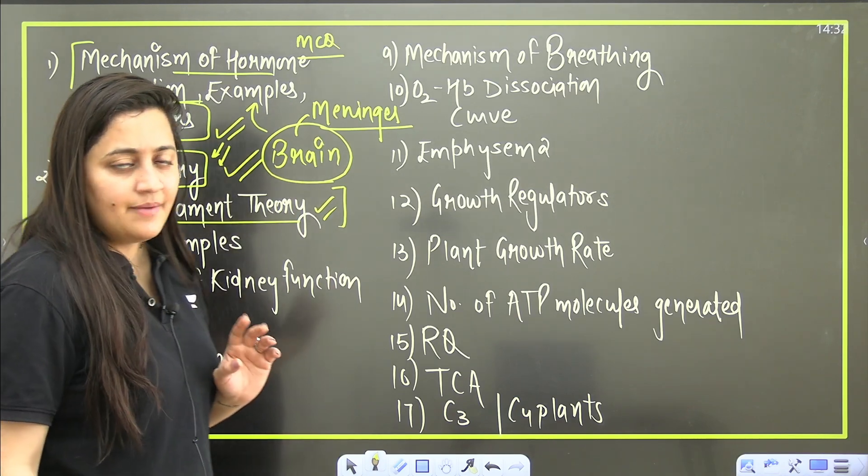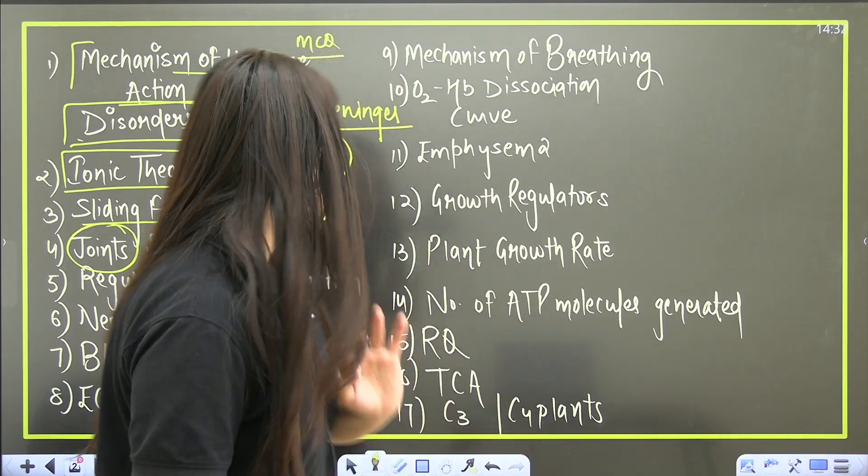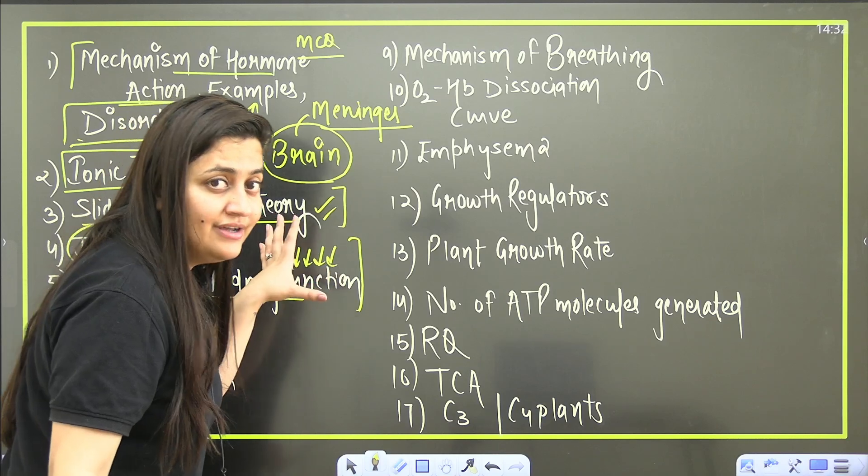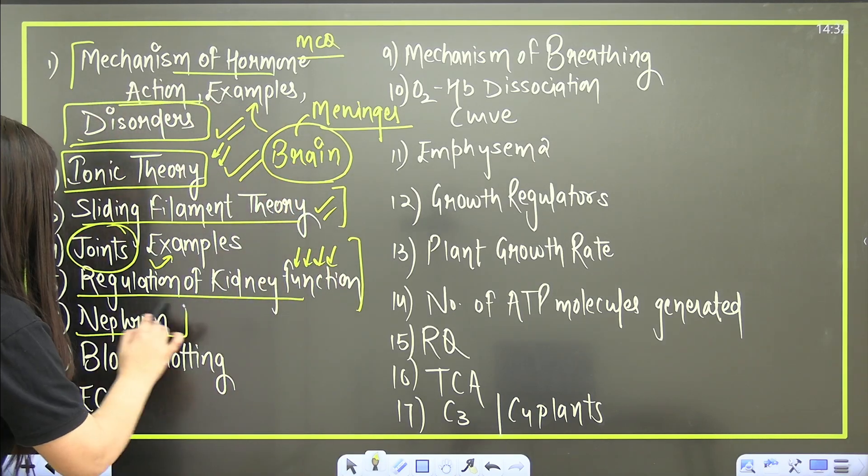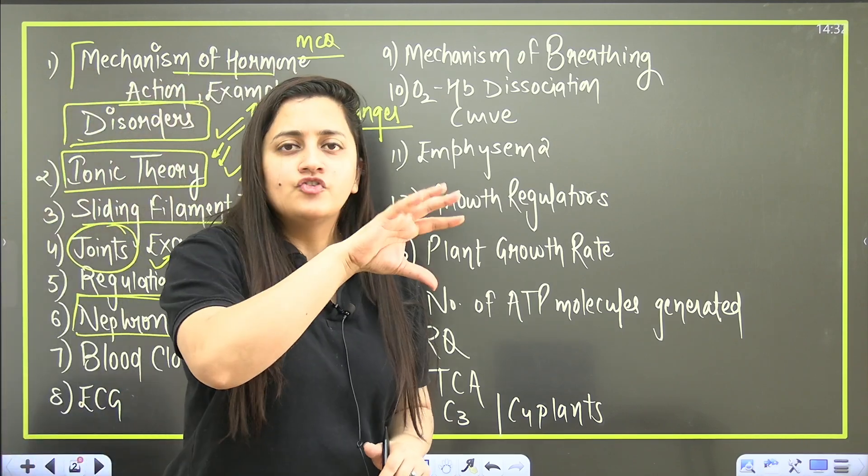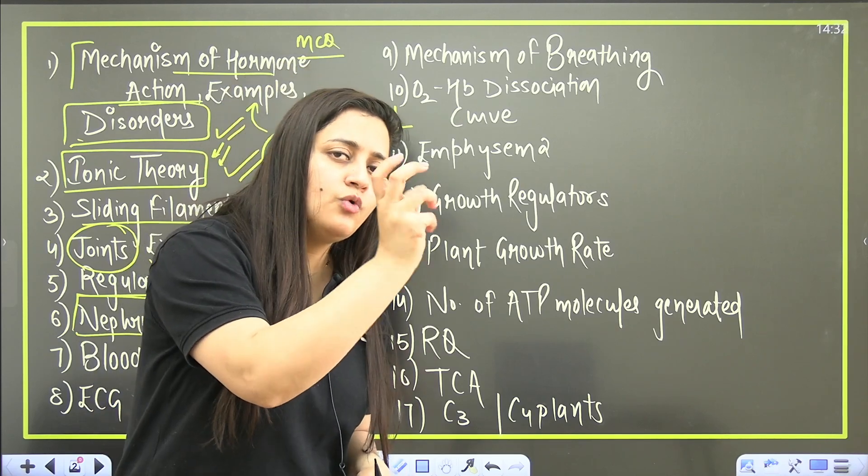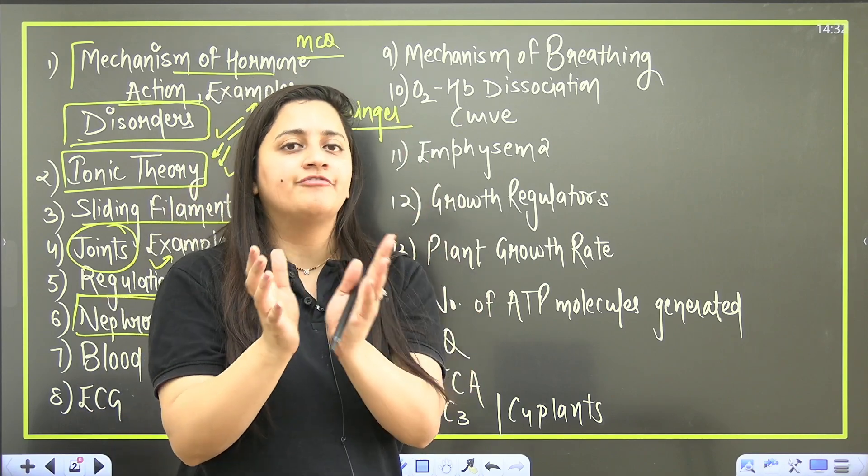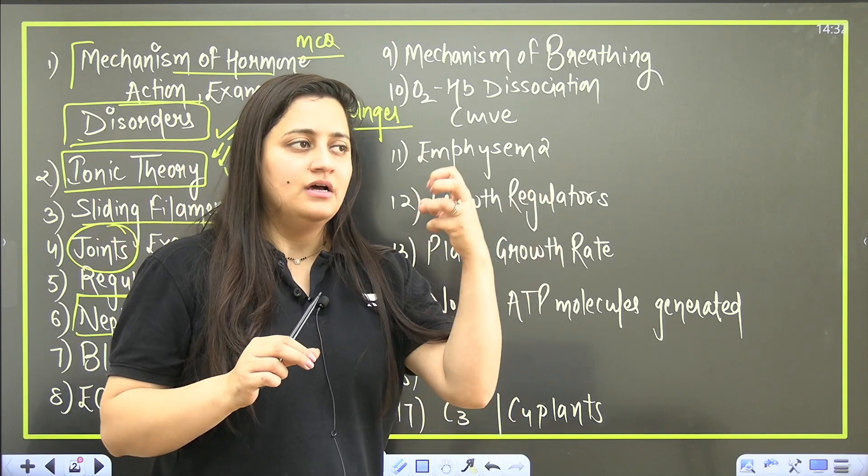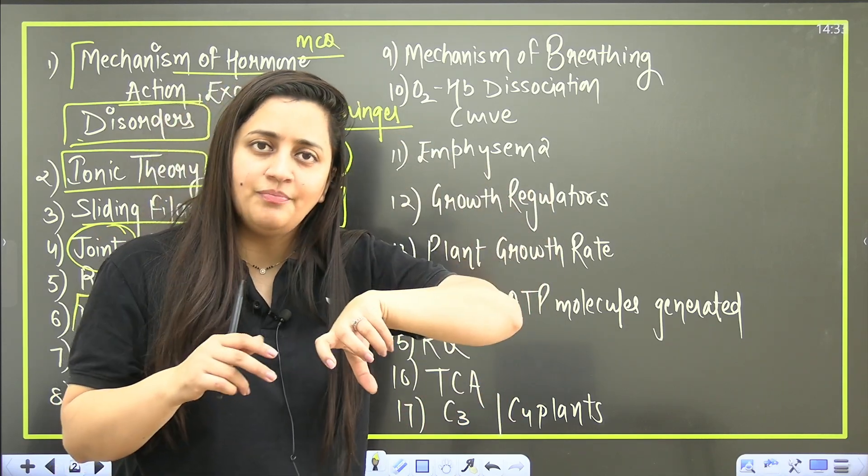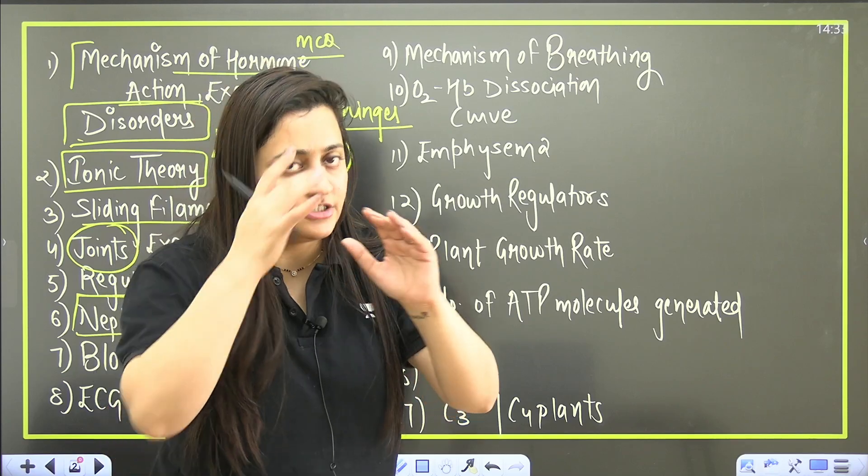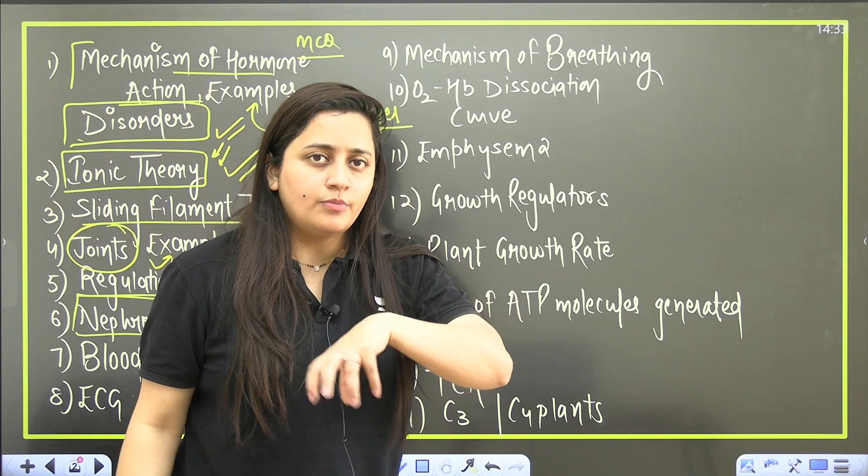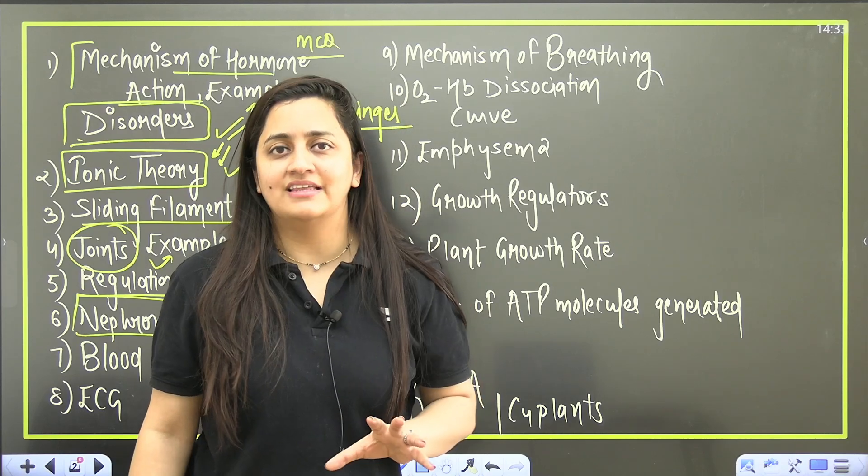Joints - from joints part you can pick up the examples because it is also the part of your practical biology syllabus. Then regulation of kidney function - role of all the hormones here you should cover. When it comes to the nephron, the diagram you should know. Which cells are lining the PCT, which part is permeable to water, which part is permeable to electrolyte. You should even know the glomerular filtration part, basically the urine formation part and the counter current mechanism.